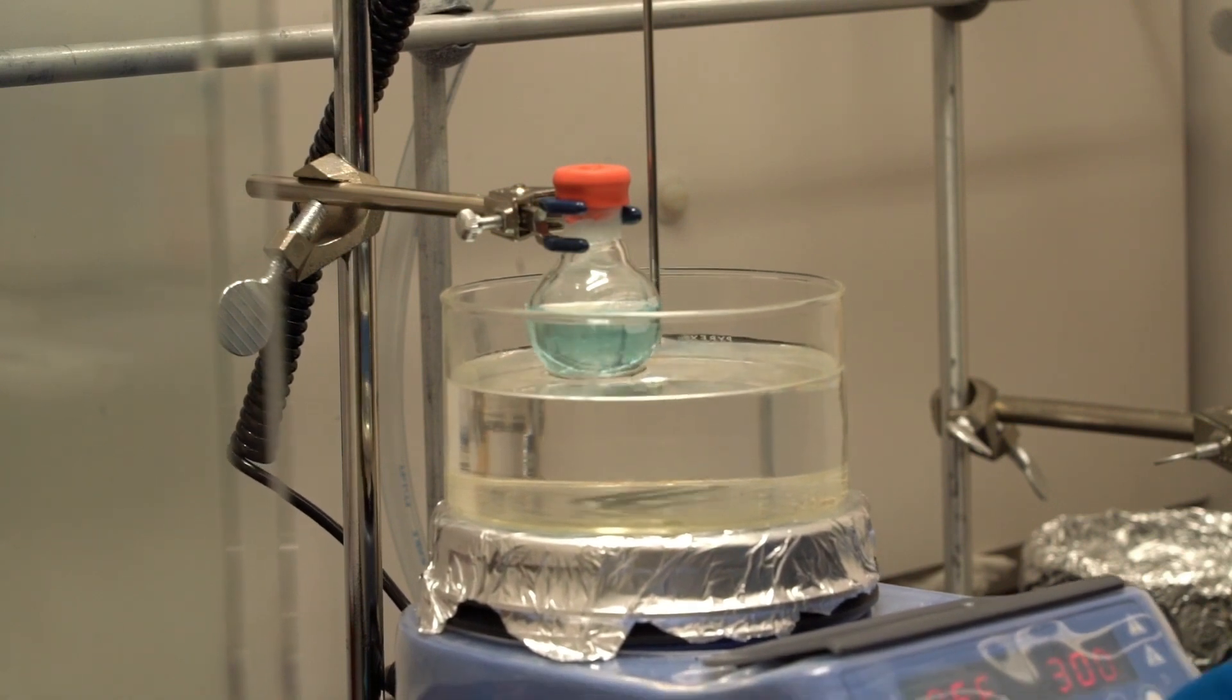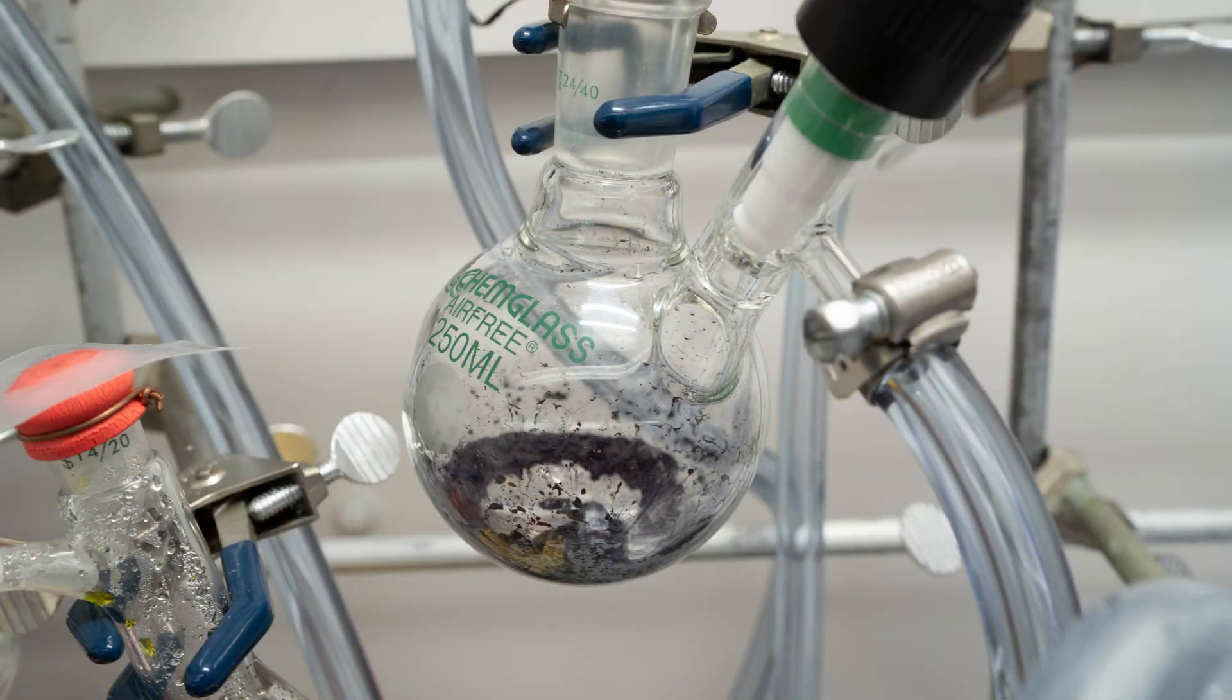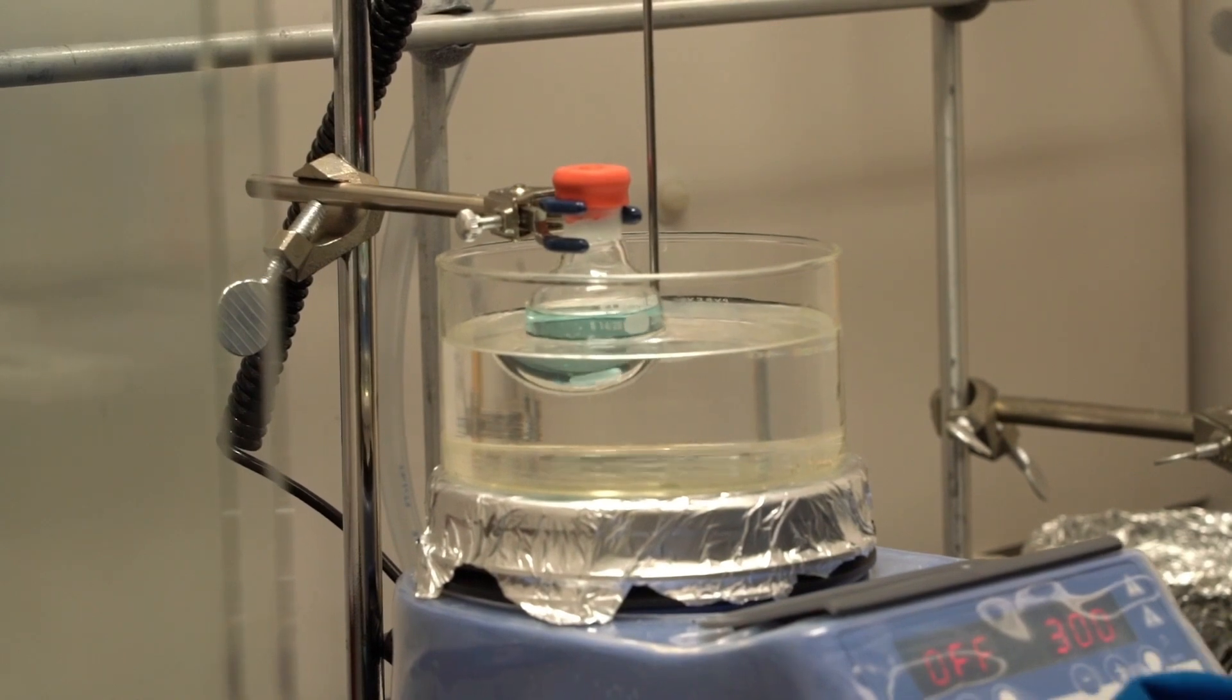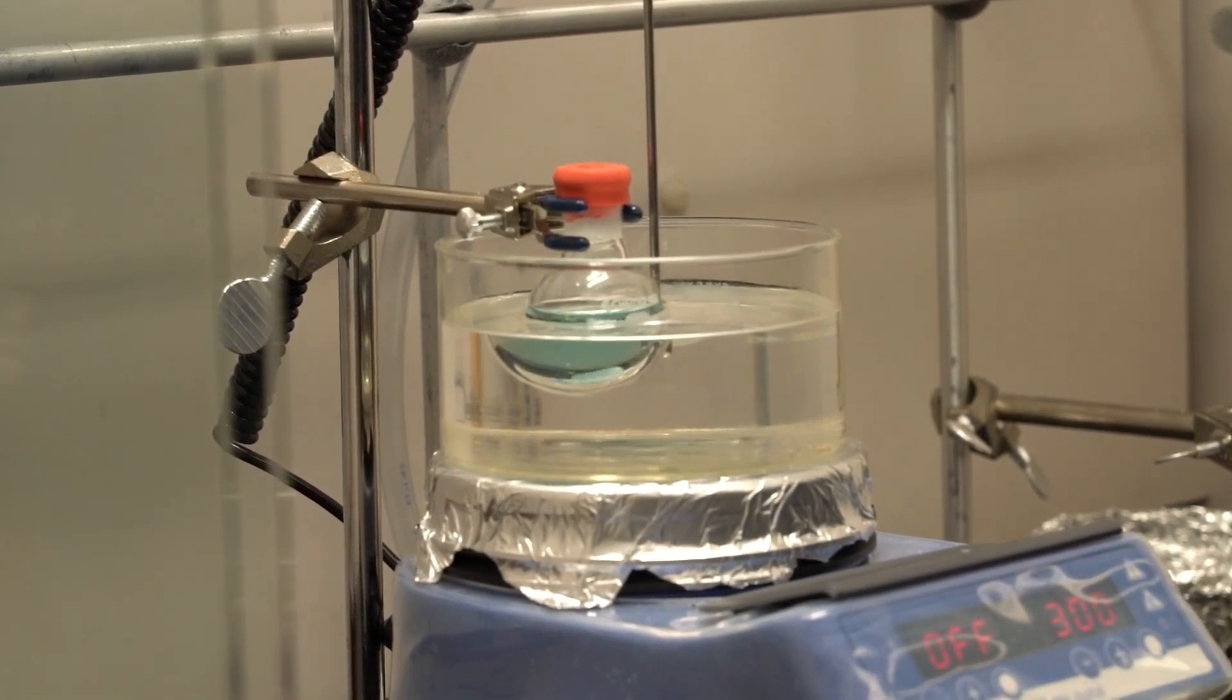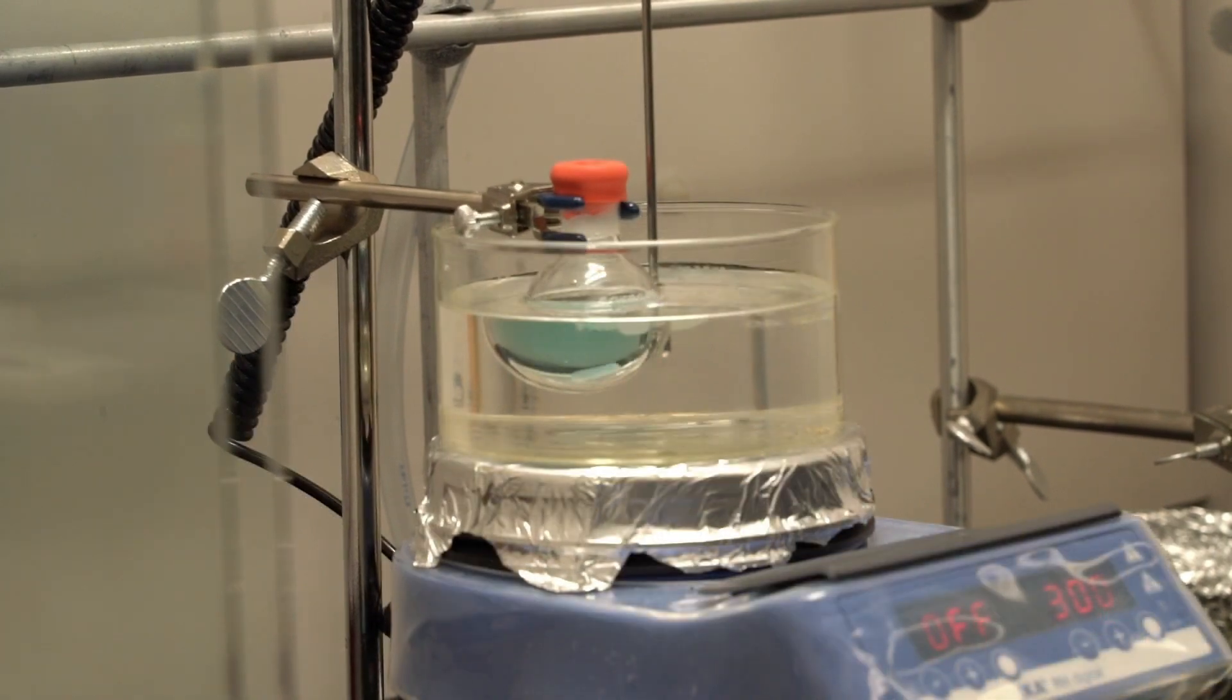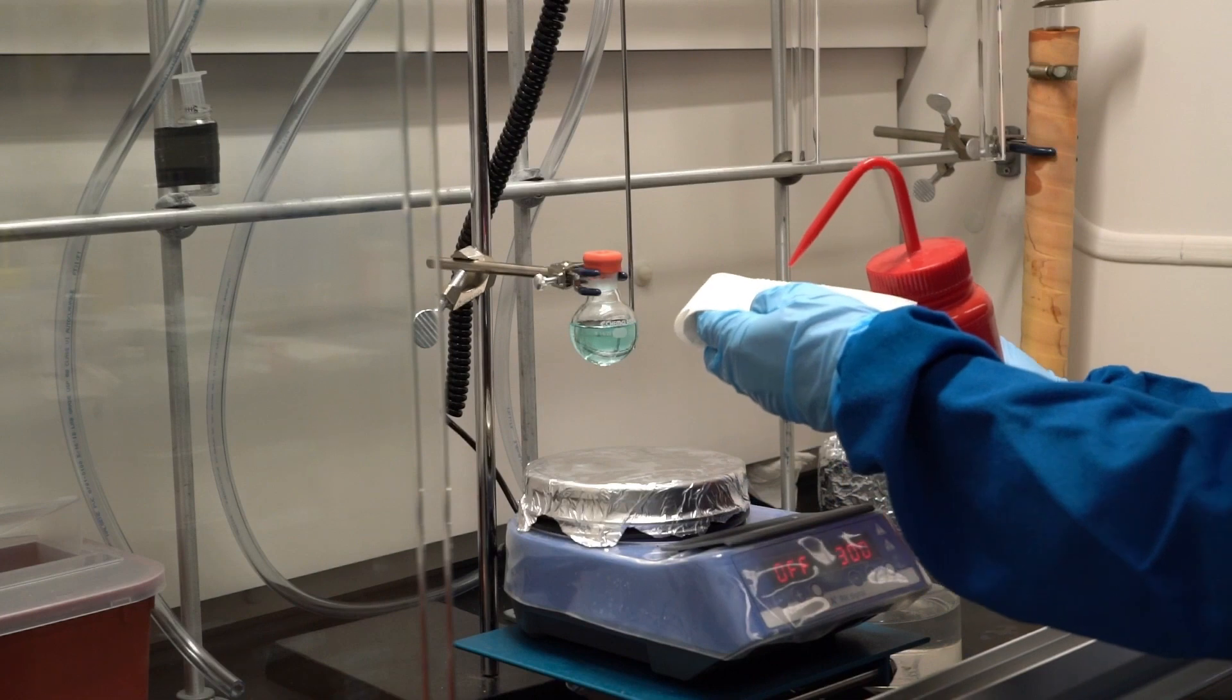When using the oil bath, consider the height of the oil level versus the reaction liquid. If you are forming crust on your flask walls, you can place the oil level a little bit lower than the solvent level. If you need better temperature homogeneity in the reaction, the solvent level should be a bit lower than the oil level.